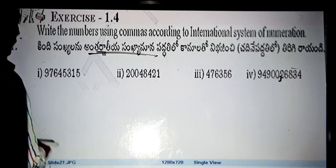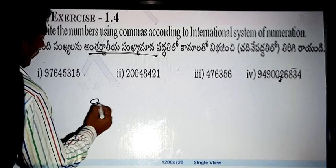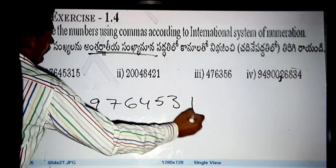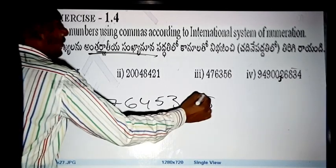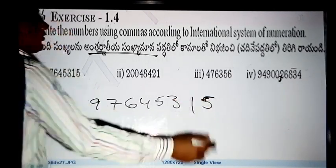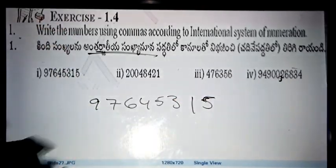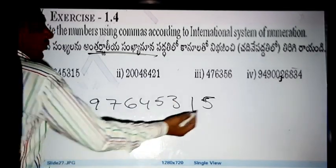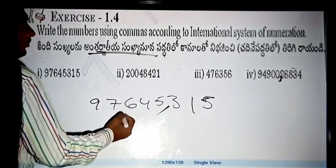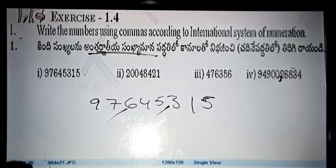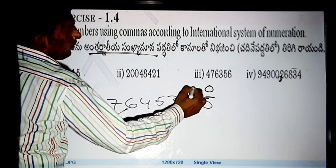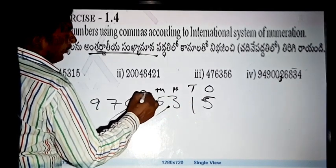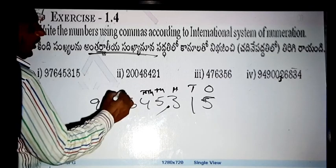Okay, now look at this. First, let's give a number. Let's give an example. After three, after three, after three, after three. Let's give a number. After three, after three, after three. One, two, three, comma. Now let's give a number. Places, tens, hundred, and thousand, ten thousand. Here we go. Hundred thousand.